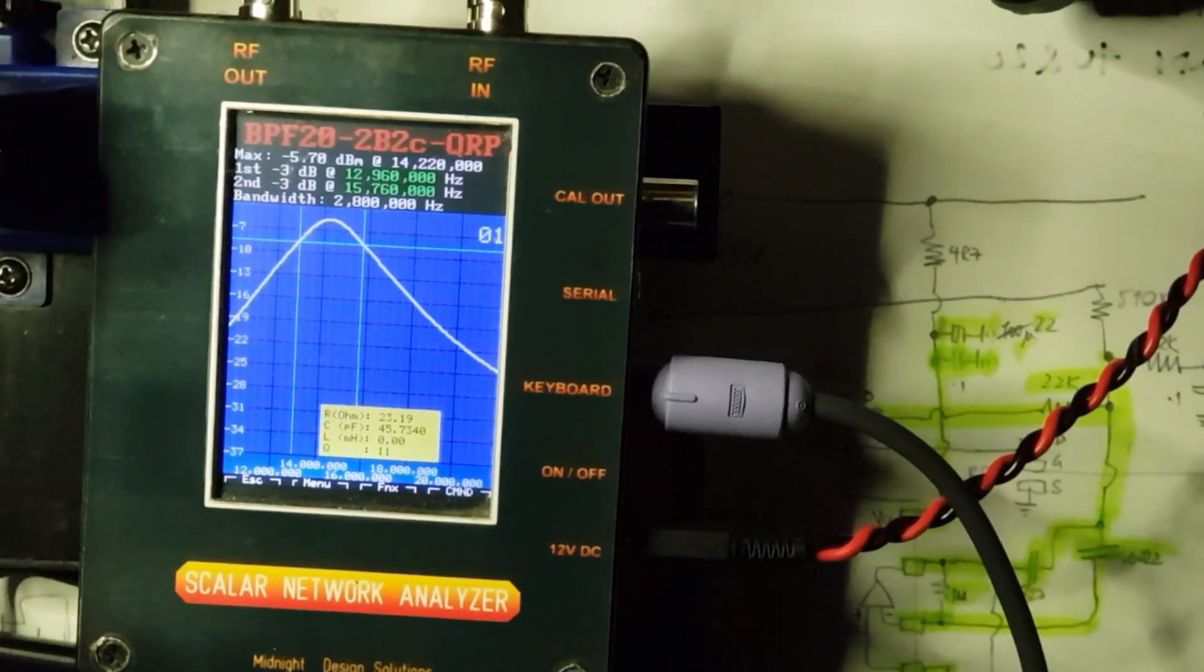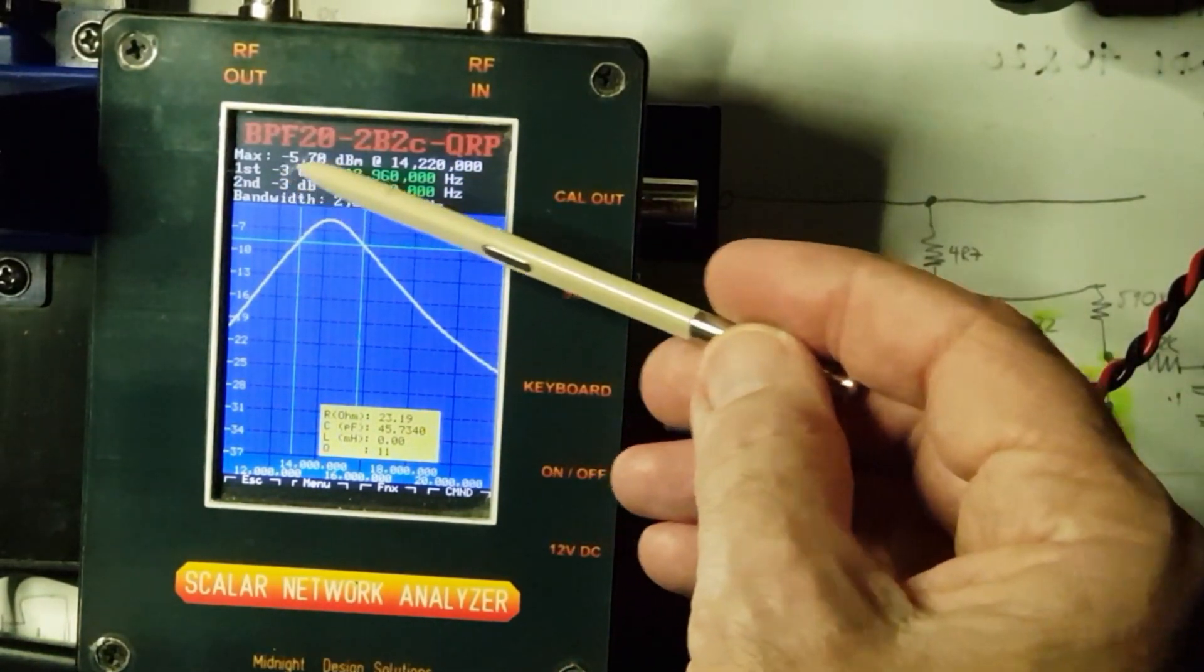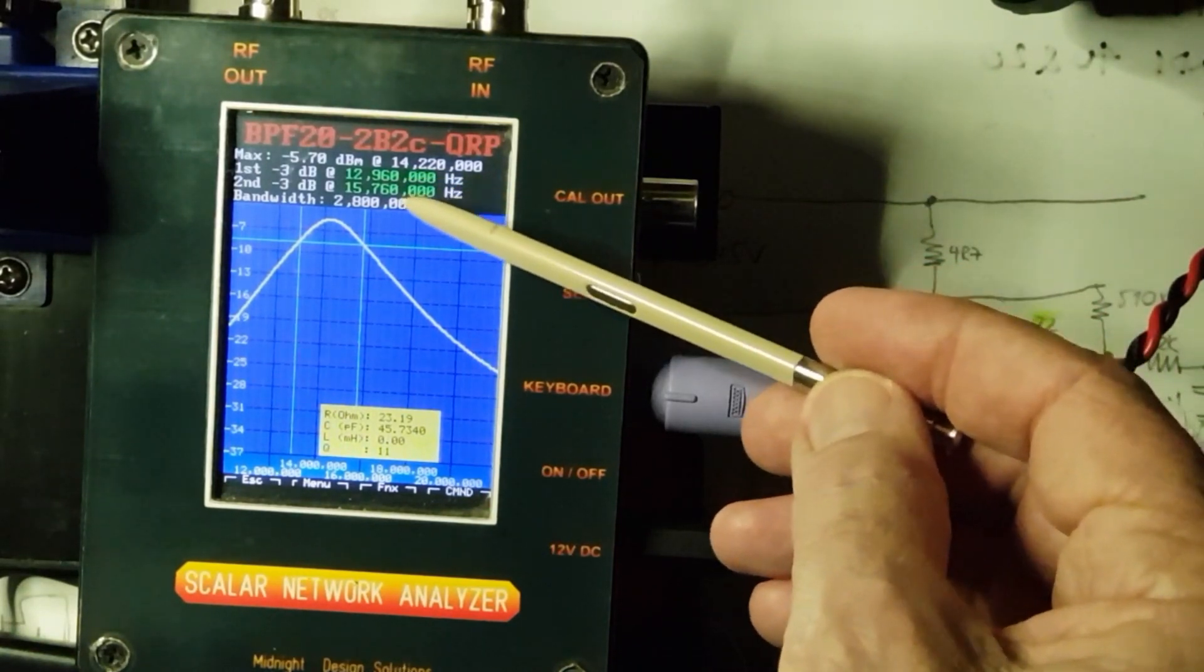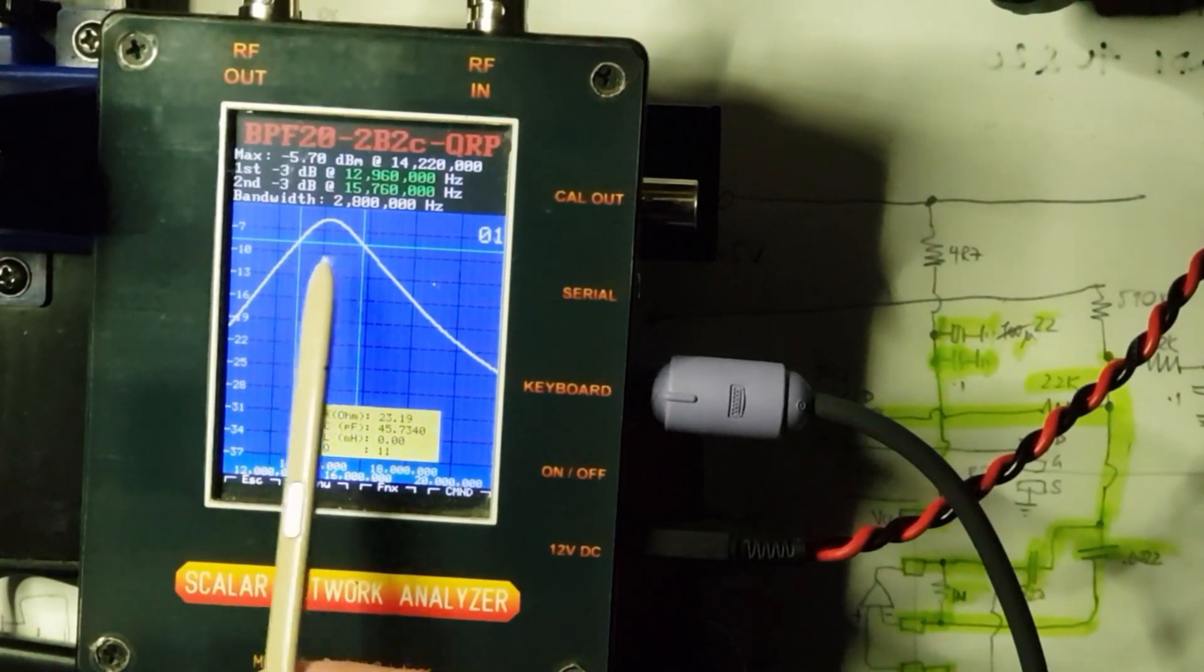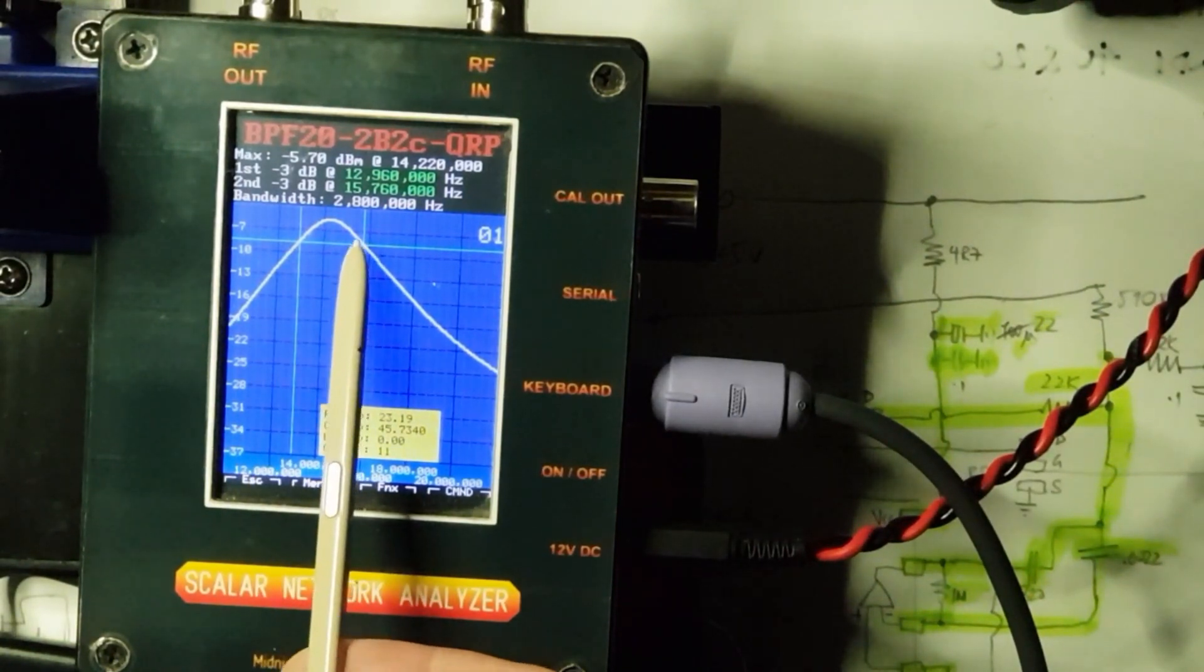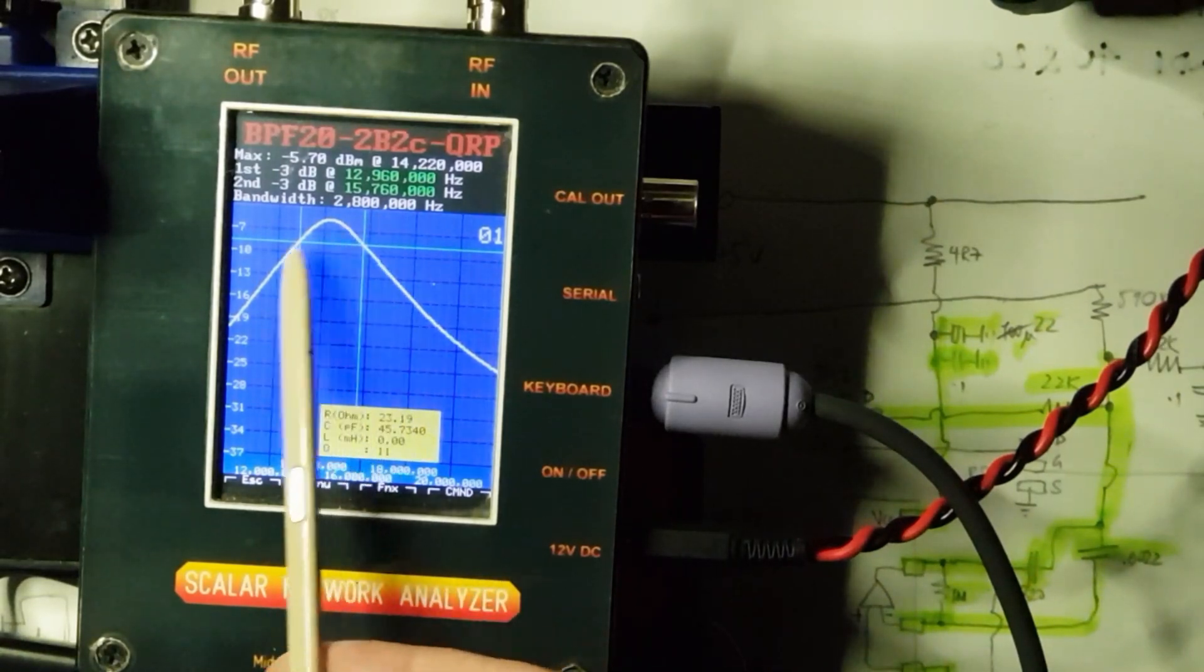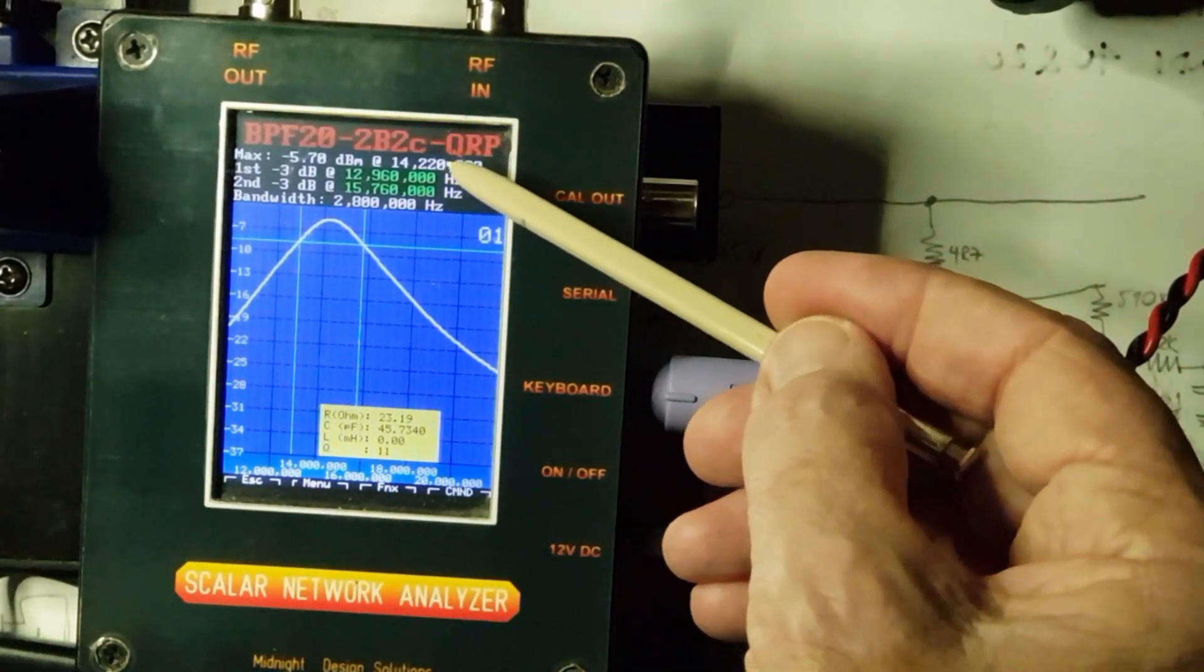So the 20 meter bandpass filter is in circuit. And here you can see the sweep. The 3 dB points are coming up at 12.96, about 13 megahertz and 15.7 megahertz. So 13 megahertz on the low side, 15.7 megahertz on the high side. Bandwidth 2.8 megahertz. And the peak of the filter is at 14.220.